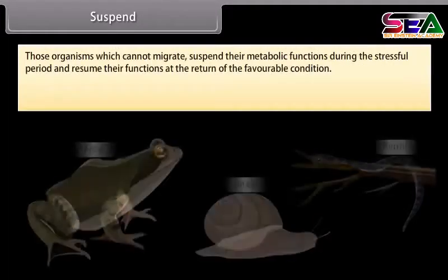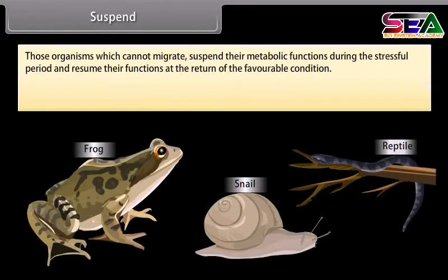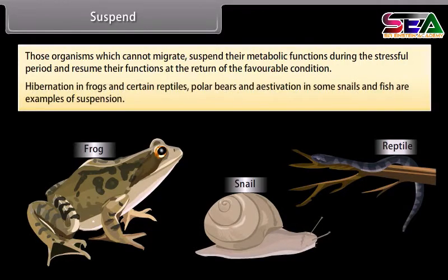Those organisms which cannot migrate suspend their metabolic functions during the stressful period and resume their functions when favourable conditions return. Hibernation in frogs and certain reptiles, polar bears, and aestivation in some snails and fish are examples of this suspension.